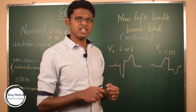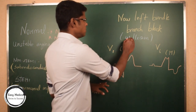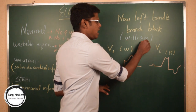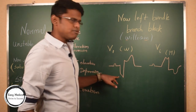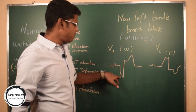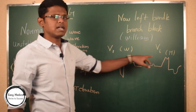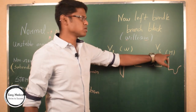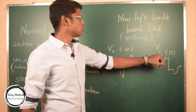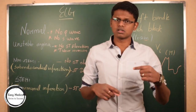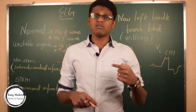Remember the term WILLIAM. In the V1 lead, the wave shows a W pattern downward, and in the V6 lead, it shows an M pattern upward. Through this, you will be able to differentiate STEMI and non-STEMI.